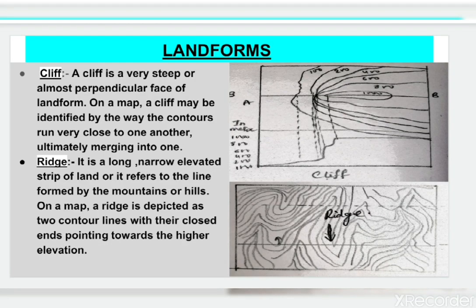A cliff is a very steep or almost perpendicular face of a landform. On a map, a cliff is identified by contours that run very close to one another, ultimately merging into one. A ridge is a long narrow elevated strip of land formed by mountains or hills. On a map, a ridge is depicted as two contour lines with their closed ends pointing towards the higher elevation.